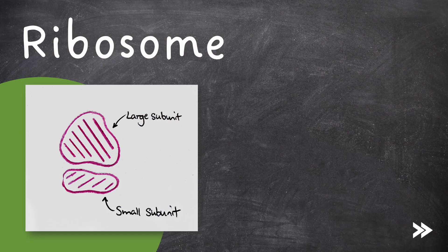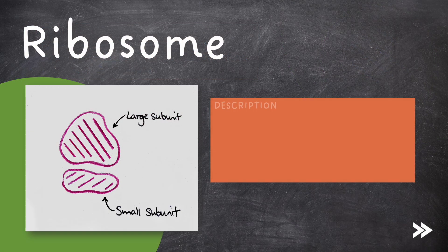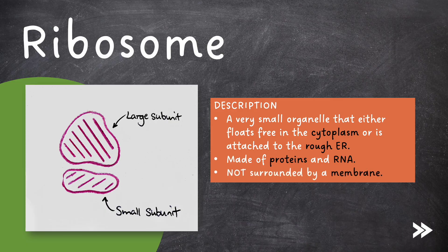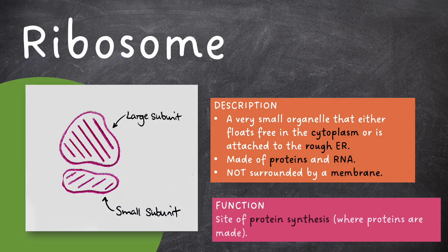Then we have ribosomes. These are very small organelles that either float free in the cytoplasm or are attached to the rough endoplasmic reticulum. Ribosomes are made of proteins and RNA. They are not surrounded by a membrane. Ribosomes are the site of protein synthesis, i.e. the site where proteins are made.